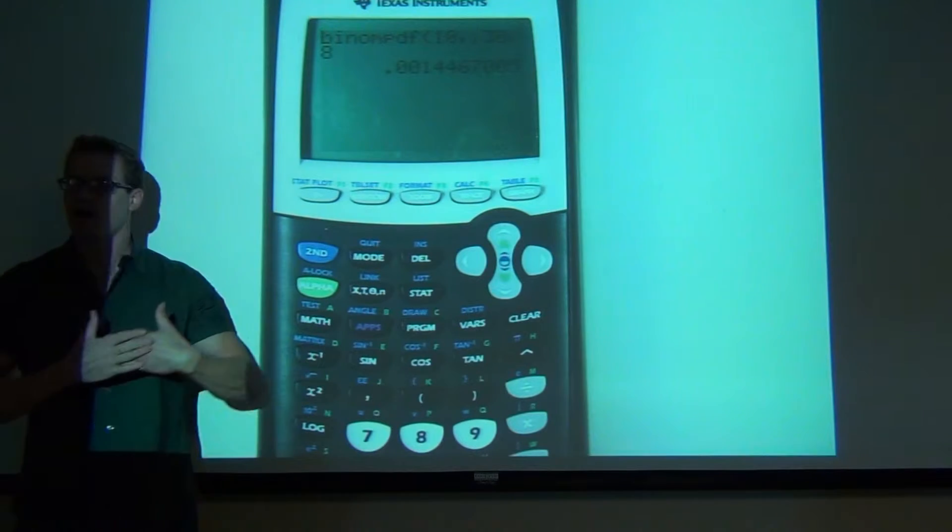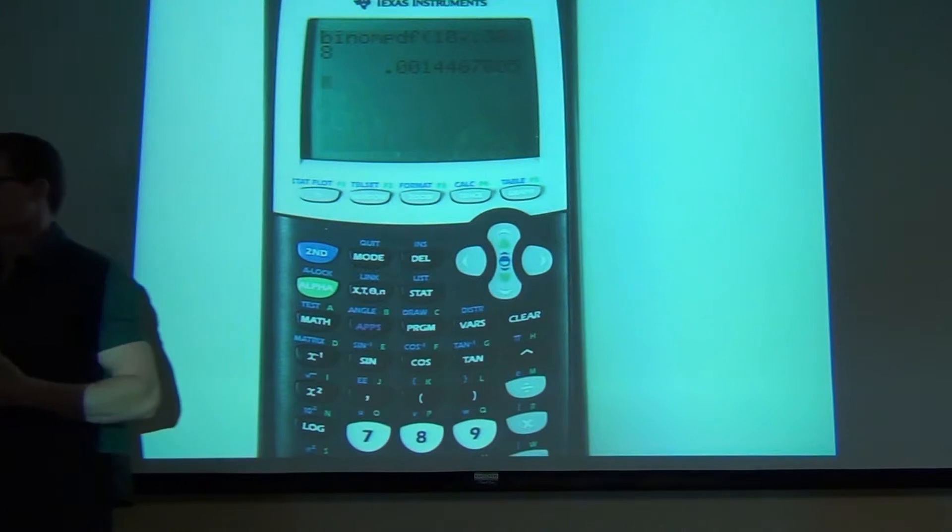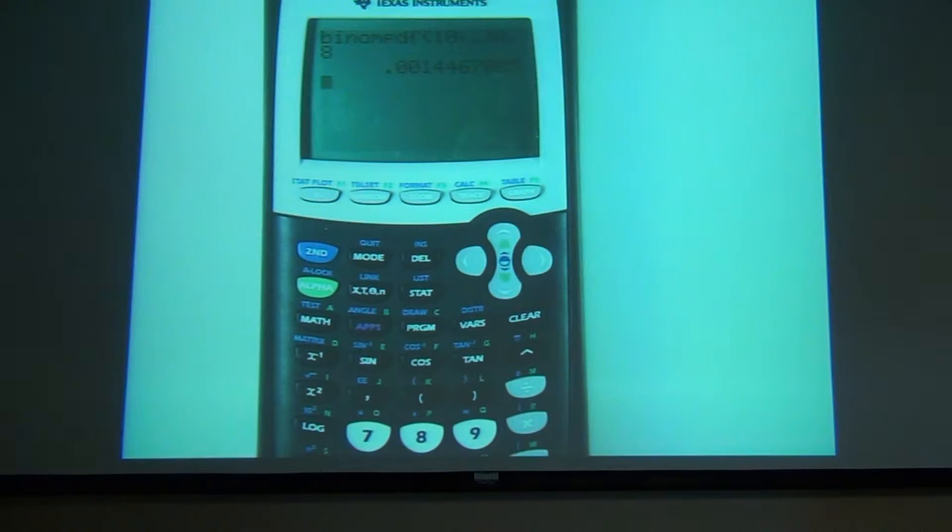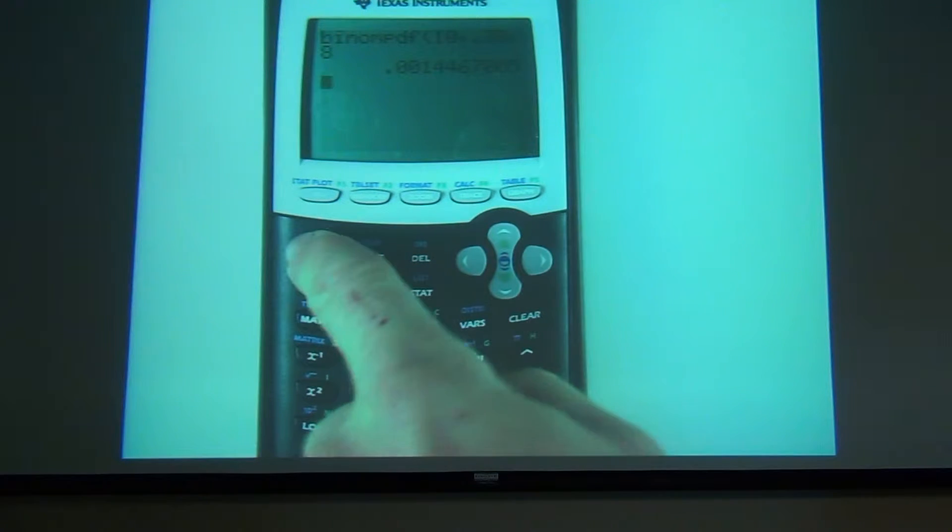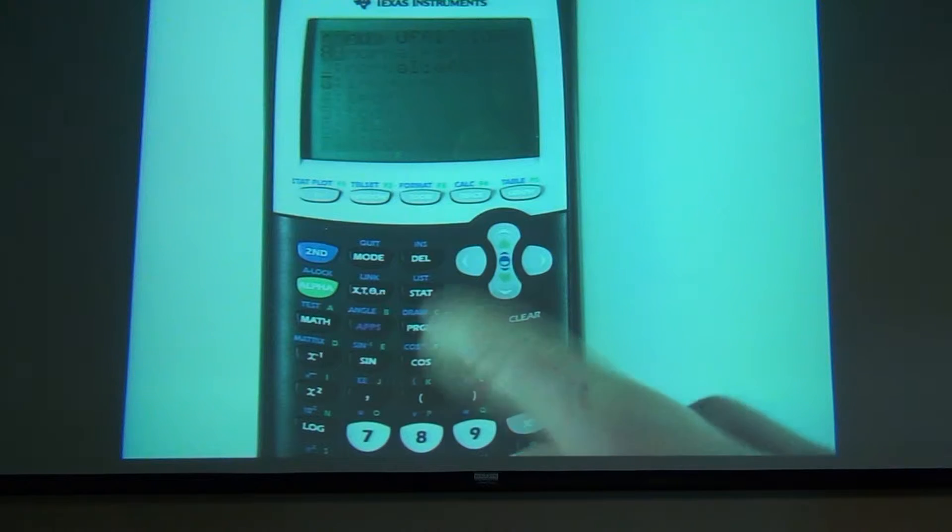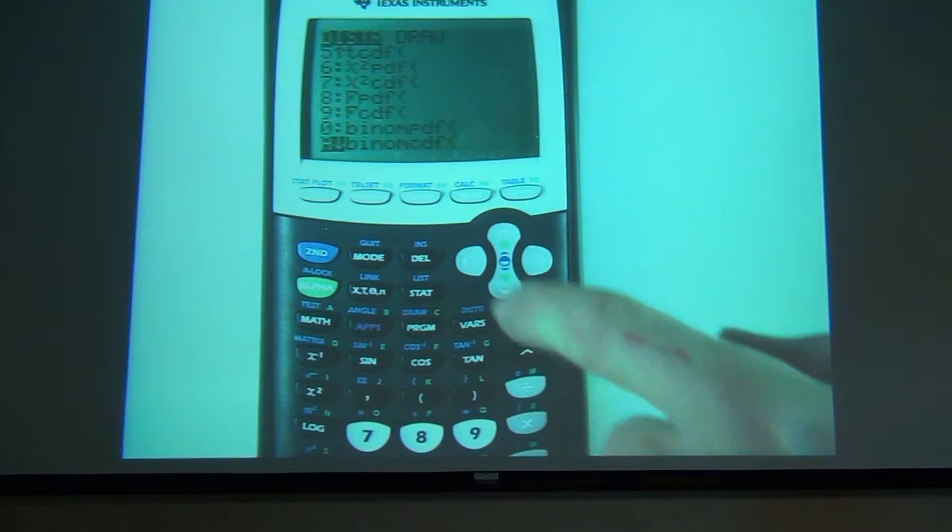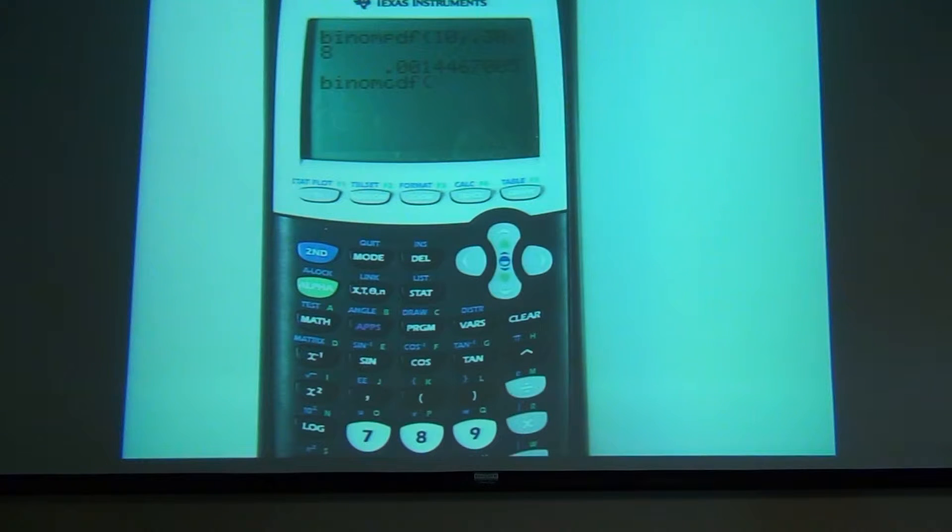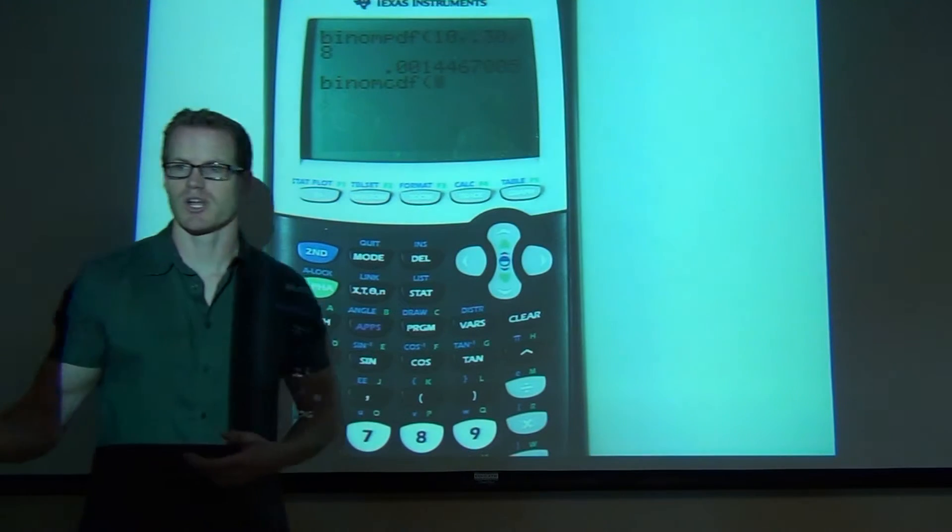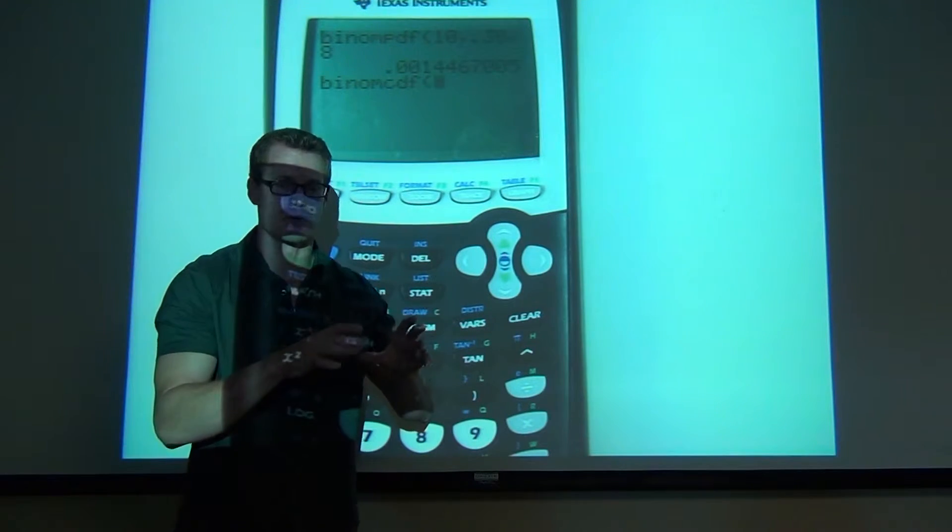.0014467. That's exactly what we just calculated with all that work with the formulas. Now if you want to find up to and including, go to distribution again. Go down to binomial CDF. Press enter. What this will do is add up all the probabilities up to a certain number for you, and including that number.